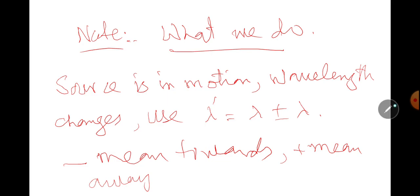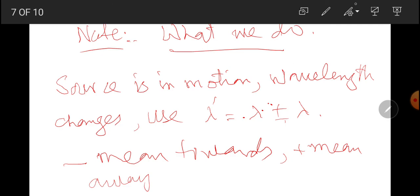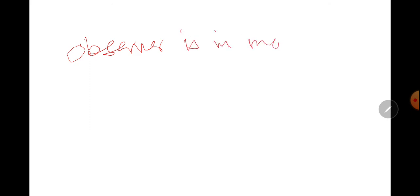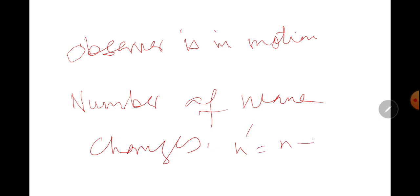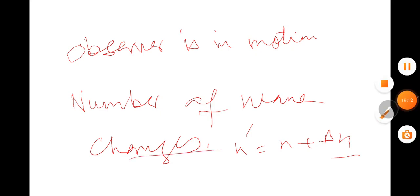If the observer is in motion, the number of waves changes. Positive means towards, negative means away. Thank you students, Allah Hafiz.